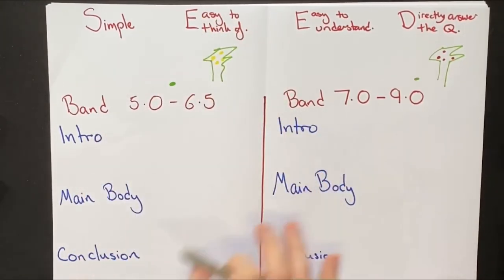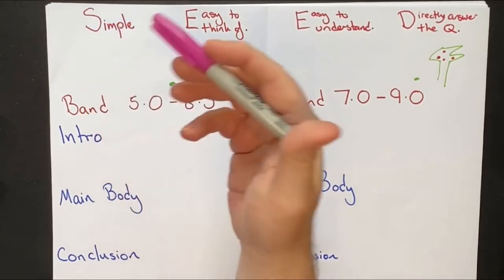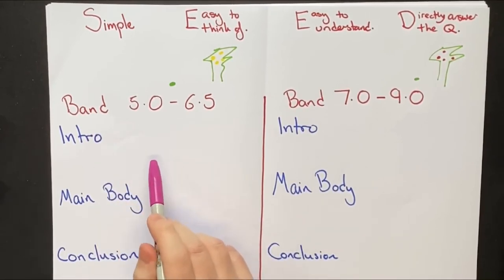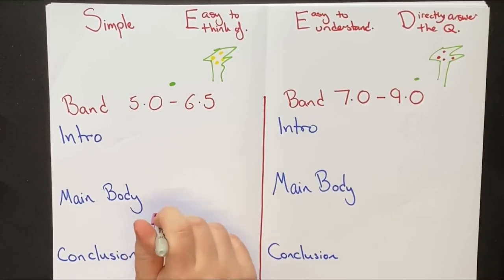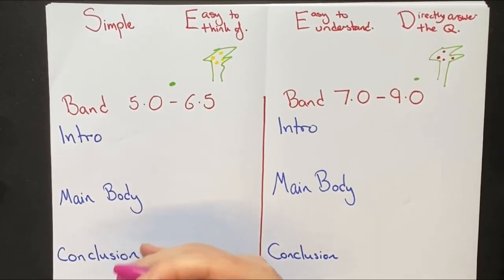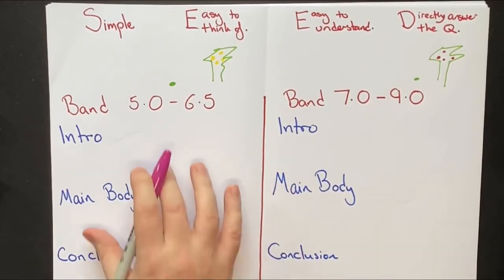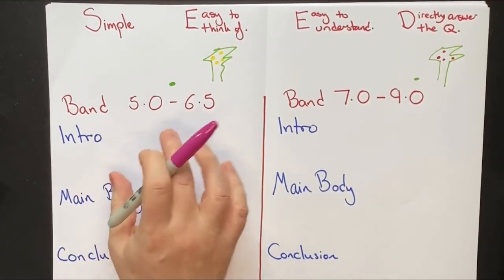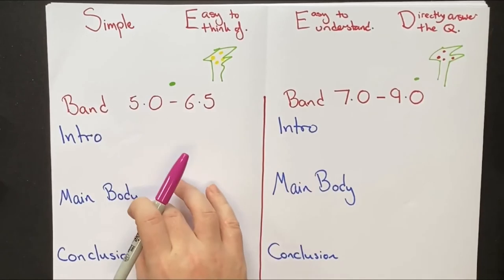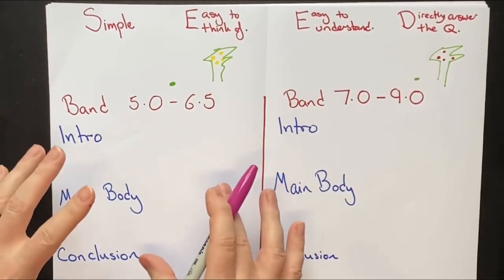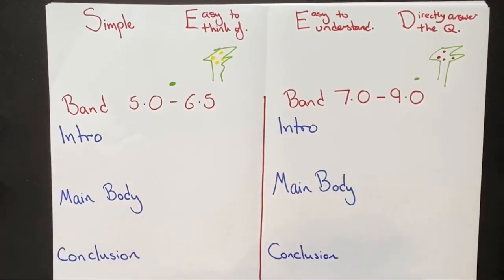If your ideas are very complex and difficult to think of, difficult to understand, and don't answer the question, your introduction is not going to be very clear. In your main body, complex ideas are difficult to develop because they are more difficult to explain, and students often find them difficult to think of examples for. So your essay is going to be a complete mess. You're going to run out of time because they're difficult to think of. Often students will think of very complex ideas, get to the main body, figure out they don't understand it or can't think of an example, start again, run out of time, and fail the test.